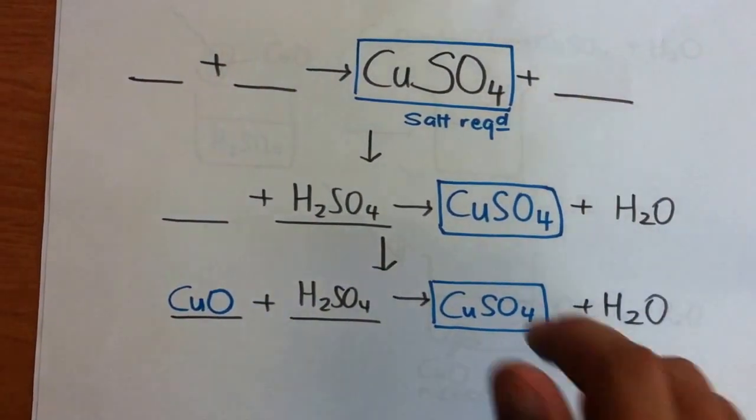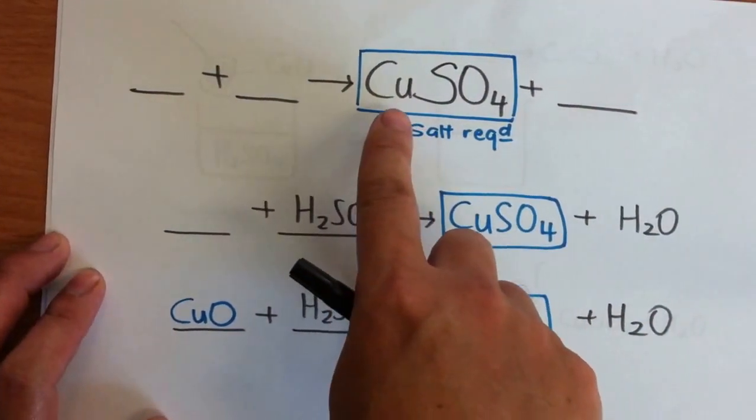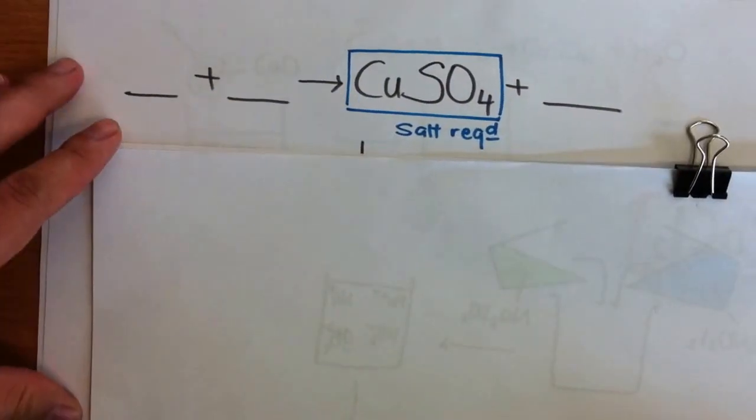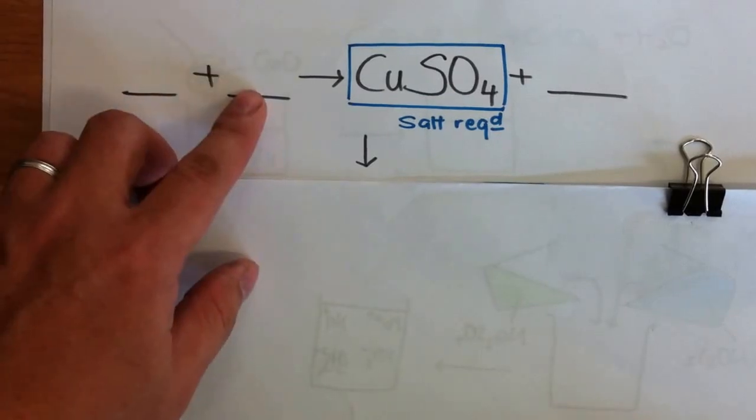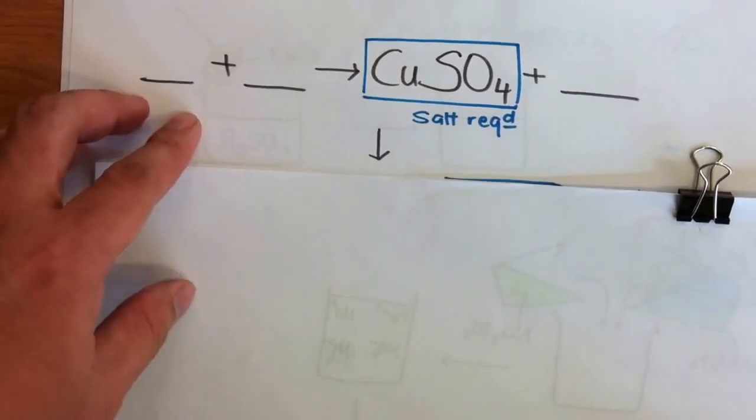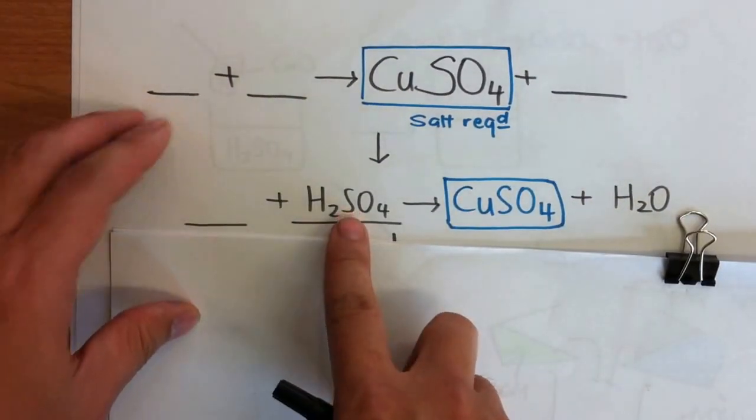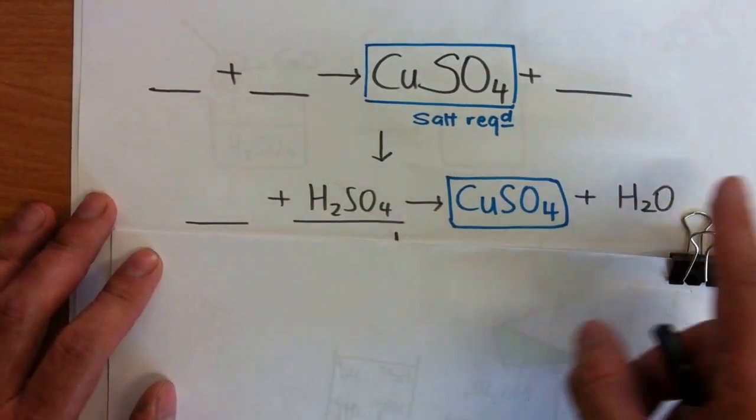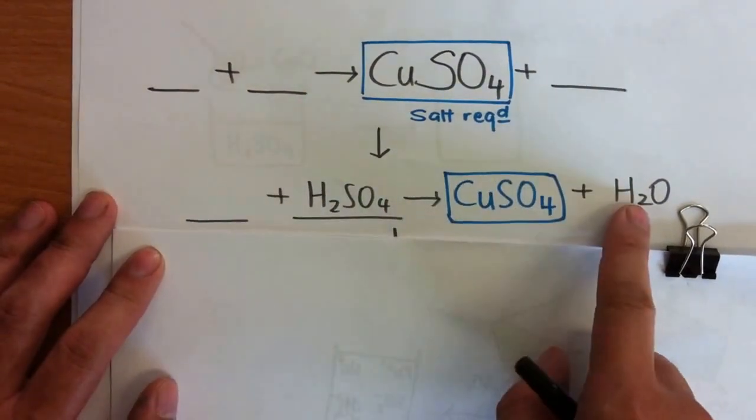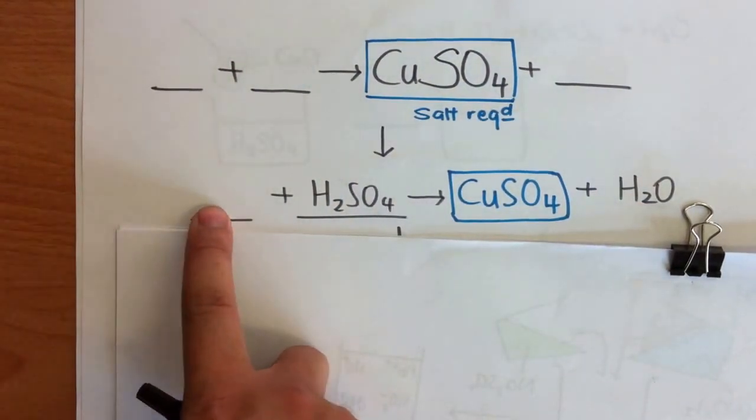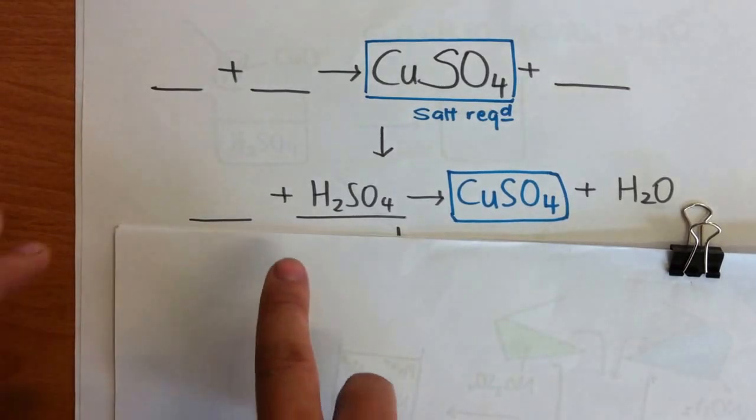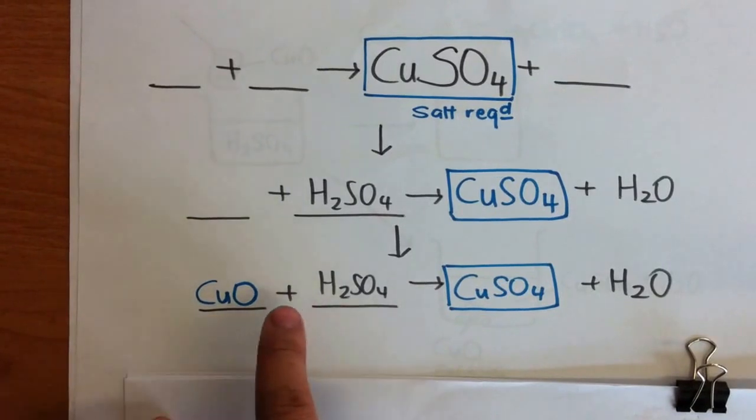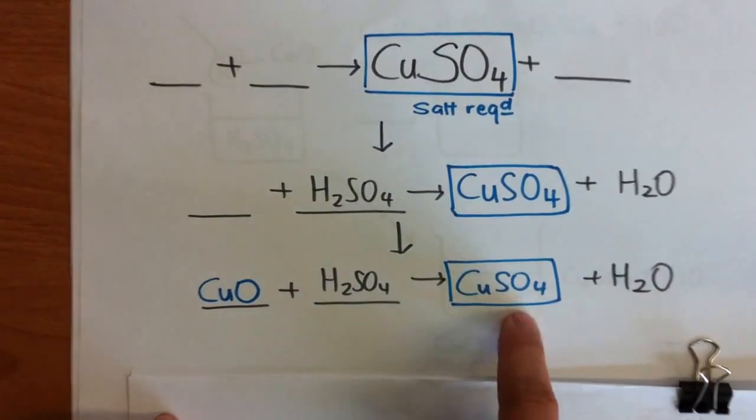Now, first example. If I want a salt, for example, copper(II) sulfate, what acid would I use? Sulfate. So I will use sulfuric acid. At the same time I know I will use a reaction that will give me the least complication. I will use something that will give me water. So what will I use here? You have two options. Copper oxide or copper hydroxide. So in this case, I will use copper oxide and sulfuric acid to get this salt.